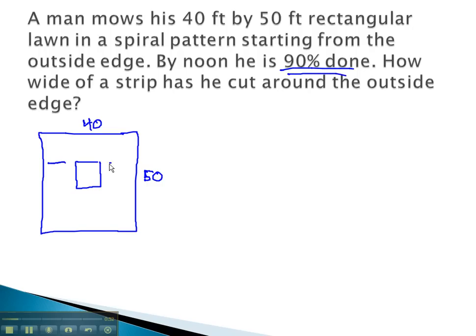He has come in an unknown amount, x, on both sides. Our new width is 40 minus 2x. He has also come down an unknown amount, x, from top and bottom. Our new height is 50 minus 2x.